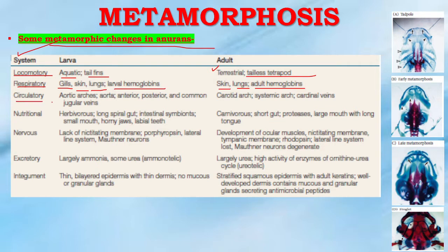In the circulatory system, in the larval stage there are aortic arches, aorta, and anterior, posterior, and common jugular veins, but in the adult there are some changes — that is the carotid arch, systemic arch, and cardinal veins.